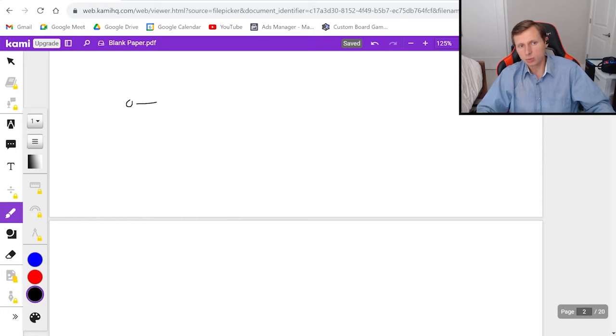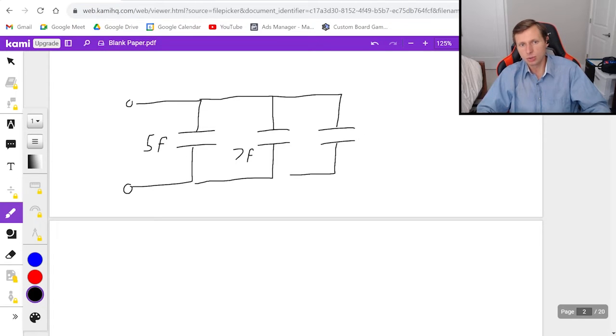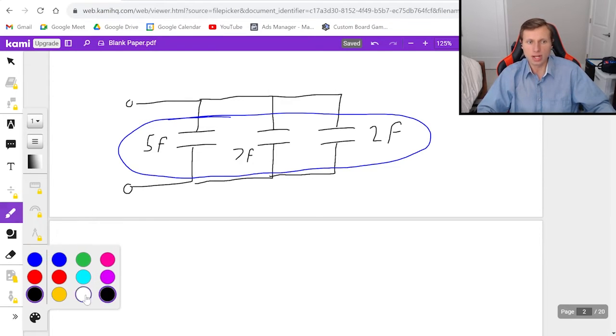Now what I like to do is I like to redraw the circuit. I think it's always a good idea to do that. So then now we still have the five farad and the seven farad from before but now we're left with just one two farad capacitor at the end. And now since all three of these are in parallel now you can add all three at once. And that's what I was saying earlier.